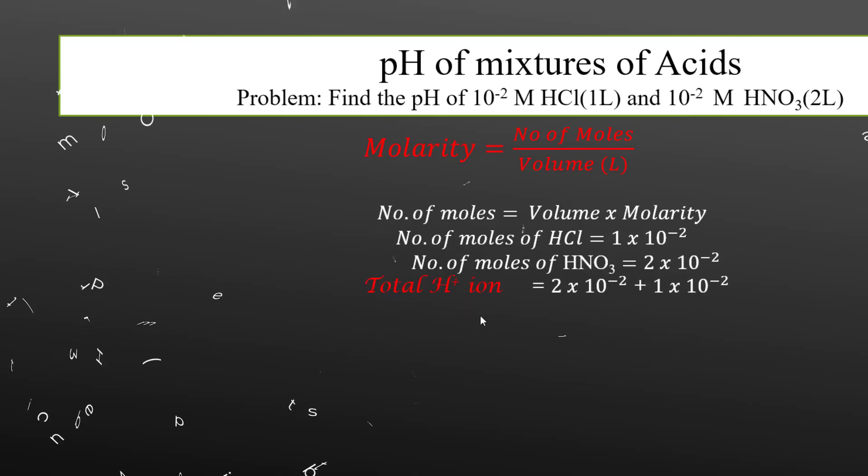So the total H plus ion in the solution would be the sum of H plus ion contributed by HCl and HNO3. So we can add these two numbers. Let's take 10 to the power minus 2 as common. So we would be left with 2 plus 1. This means we would have 3 into 10 to the power minus 2 moles of H plus ion in solution.